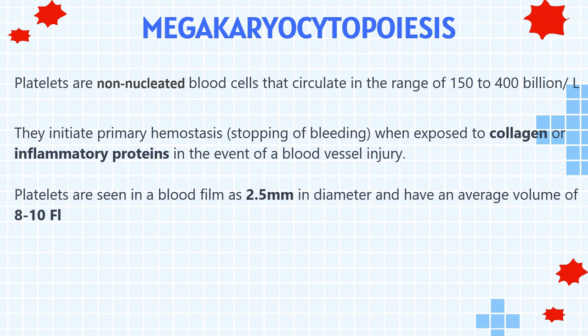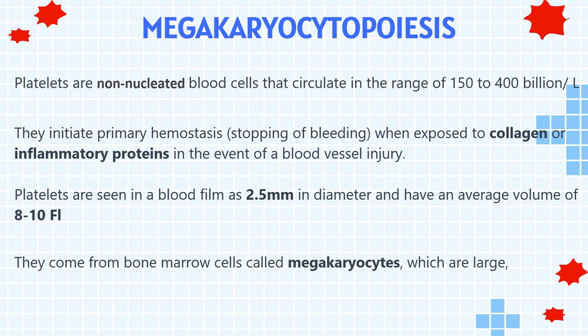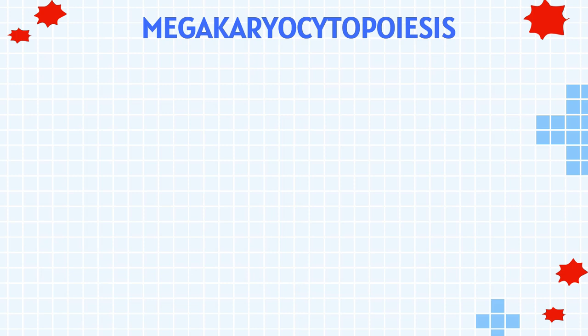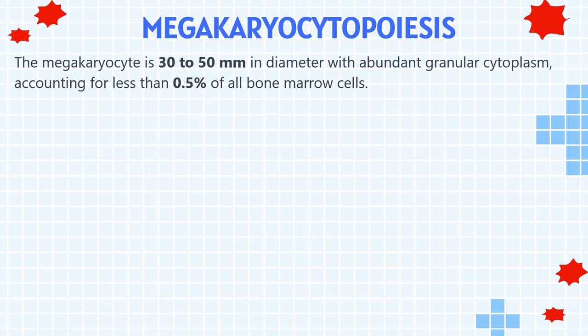Platelets are seen in a blood film as 2.5 mm in diameter and have an average volume of 8 to 10 femtoliter, with a granular structure that cannot be seen under light microscopy. They come from bone marrow cells called megakaryocytes, which are large, multilobulated, and have multiple chromosome copies. In a right-stained bone marrow aspirate smear, each megakaryocyte is 30 to 50 mm in diameter with abundant granular cytoplasm, accounting for less than 0.5% of all bone marrow cells.